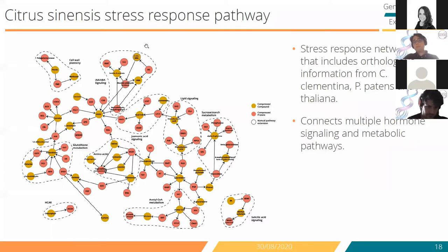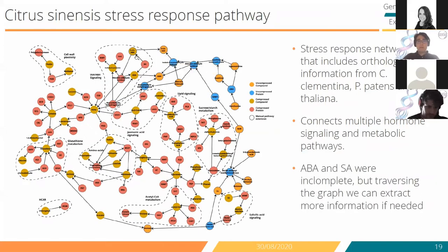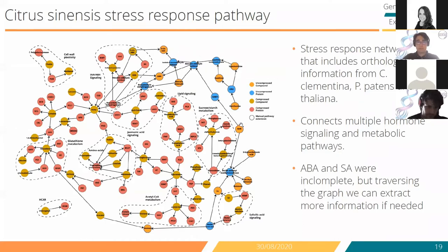One key advantage of Neo4j is that all information from the organisms is present within the database structure. This allows expanding the network in any desired way. If we expand the nodes related to ABA metabolism, we see other parts of the metabolism that weren't directly extracted through our query search but are retrievable by the user. We can also see a connection to salicylic acid through some metabolism as well.